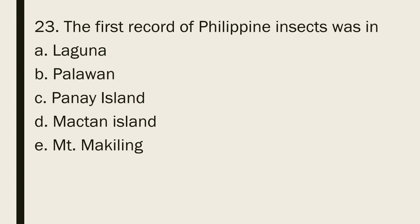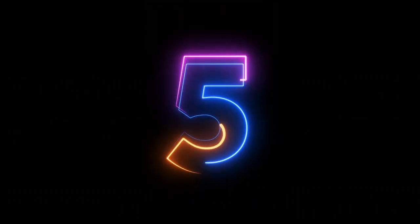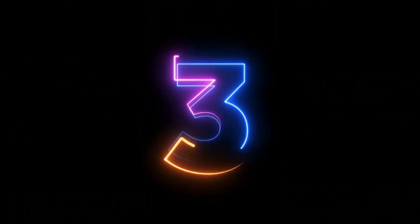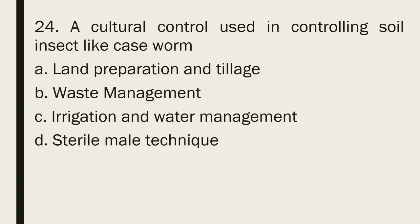Question 23: The first record of Philippine insects was in: a. Laguna b. Palawan c. Panay Island d. Amaktan Island e. Tamakuling. The correct answer is letter b, Palawan.